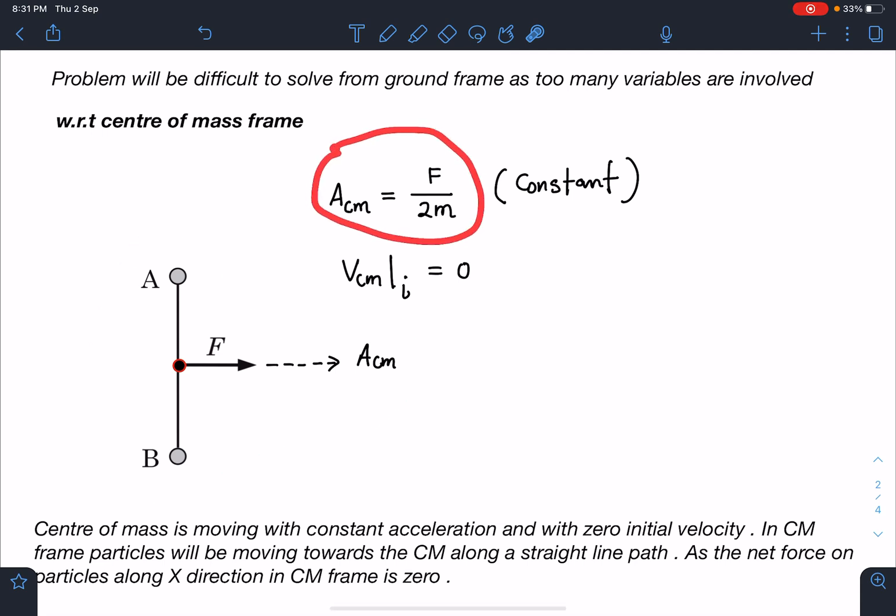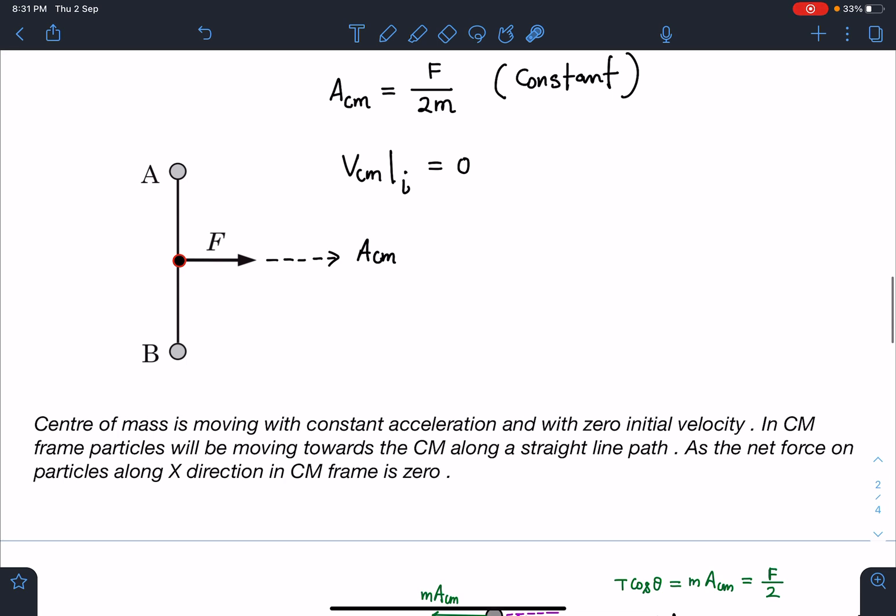So here we can see the center of mass is moving with constant acceleration and zero initial velocity. In center of mass frame, particle will be moving towards the center of mass along a straight line path as the net force on the particle along x direction in CM frame is zero. Let's verify this fact.